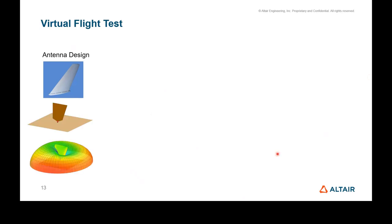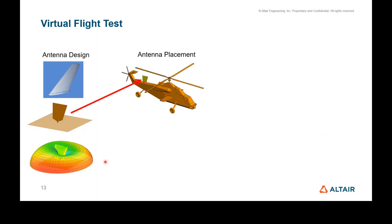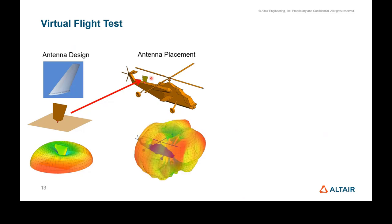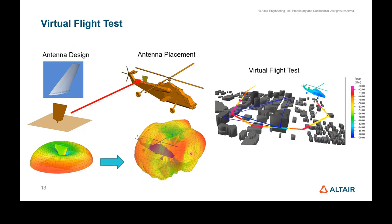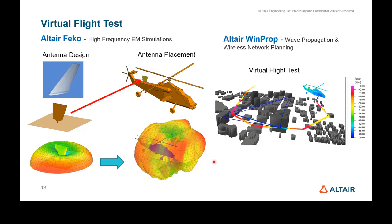A familiar use case is the virtual flight test scenario. You design a blade antenna in PICO, place it on a helicopter or any platform, and observe how the radiation pattern changes. Then in WinProp you define a base station and a flight path, and observe the connectivity power — for example, seeing it drop as the aircraft passes behind a building and then pick up again. This combination of PICO for antenna design/placement and WinProp for propagation and network planning tells you whether the radiation pattern is good enough for the flight.